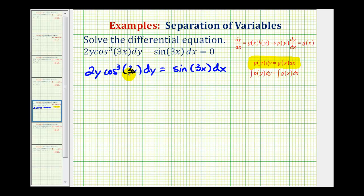Now looking at the left side of the equation, the 2y dy is good, but we don't want this cosine cubed 3x on the left side so we need to divide both sides by cosine cubed 3x.